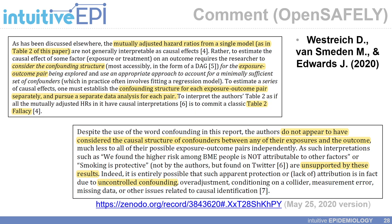They also talked about the smoking finding specifically, which found — based on their Table 2 fallacy-biased Table 2 — that smoking was protective against COVID-19 death. They say such conclusions are unsupported by the results, and that the Table 2 fallacy manifests in a number of different issues, including uncontrolled confounding, over-adjustment, conditioning on colliders, along with other issues related to measurement error, missing data, and so on.